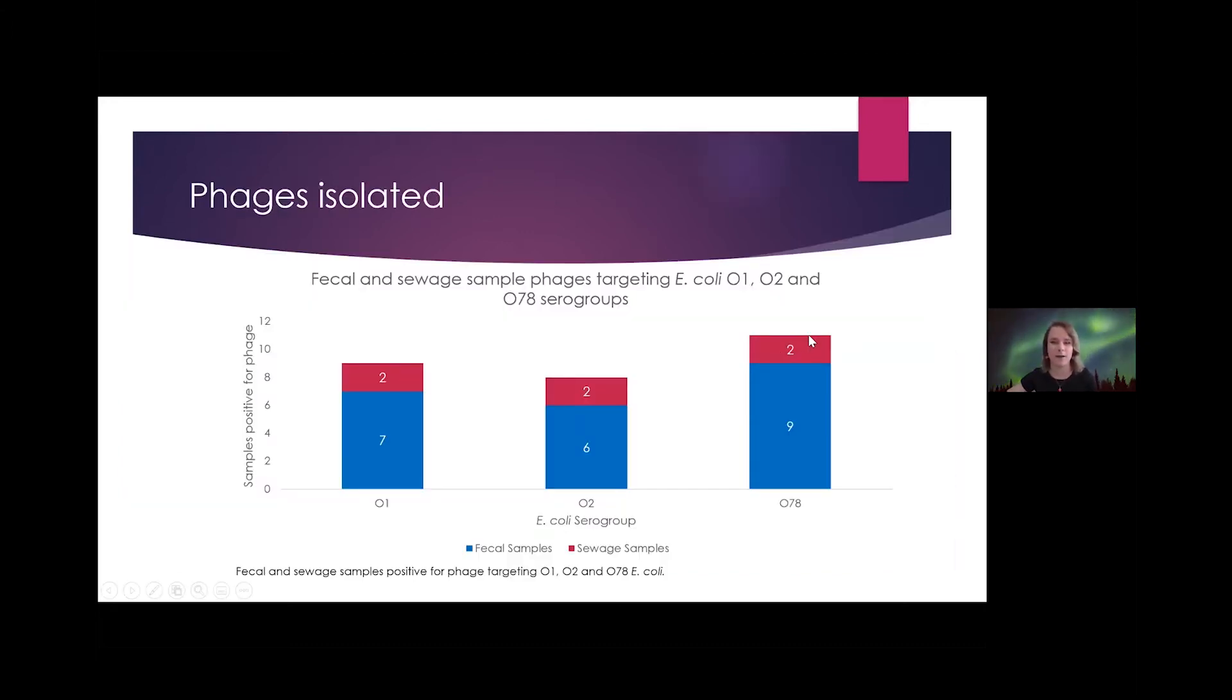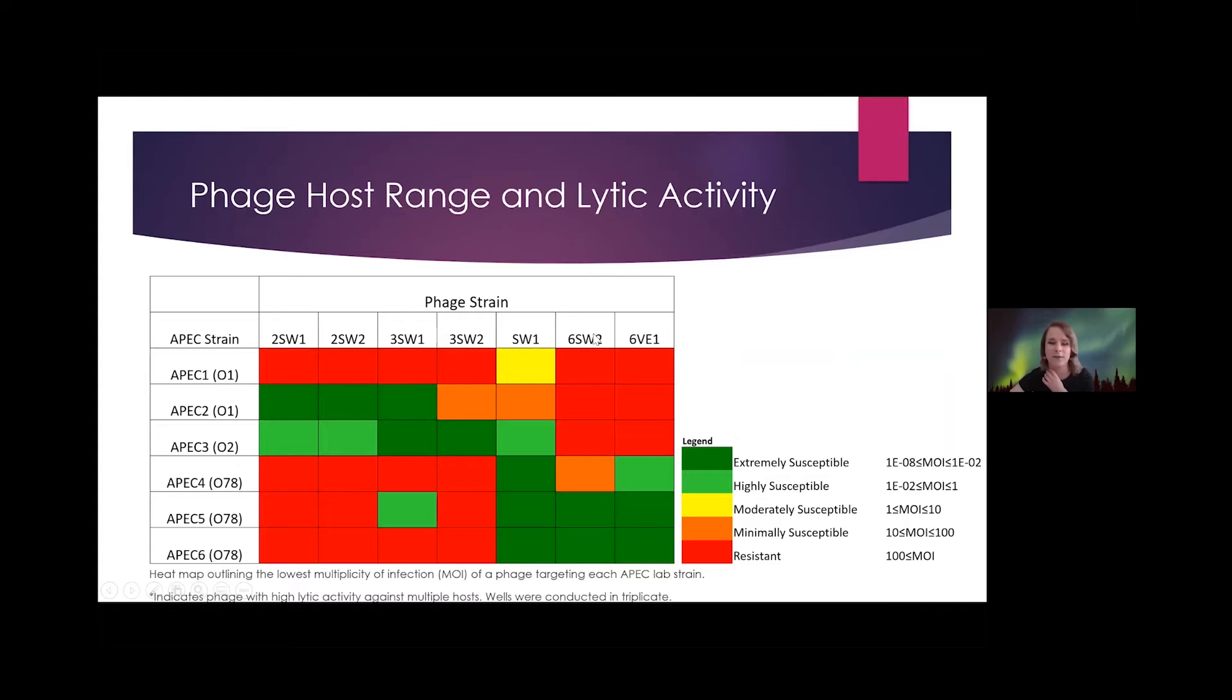Overall, we found about 28 different phages, both from hen feces and from sewage water samples, 11 of which target O78 serogroup APEC, the most commonly observed in Canada. And we chose seven of these phages for further characterization based on their ability to propagate in vitro.